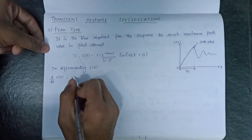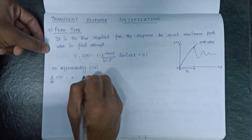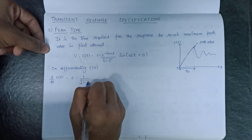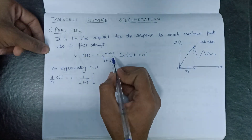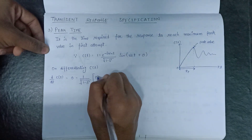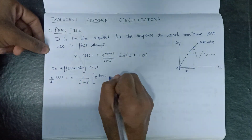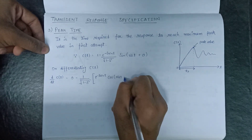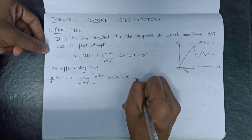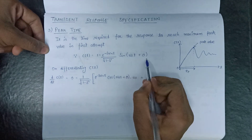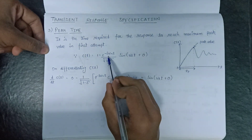Differentiating c(t): d/dt of c(t) equals the differentiation of 1 which is 0, minus 1 over root(1 minus delta squared) as a constant term outside the bracket. Applying the product rule, we leave the exponential term and differentiate the sine term — differentiation of sine gives cosine, and differentiation of (omega_d·t plus theta) gives omega_d. Then we leave the sine term and differentiate the exponential term.